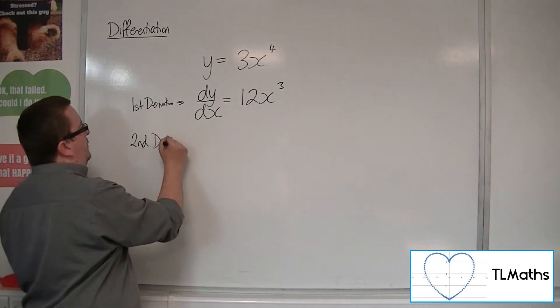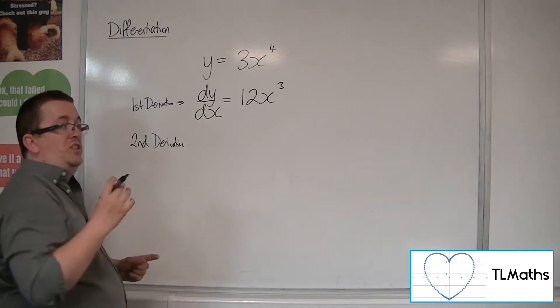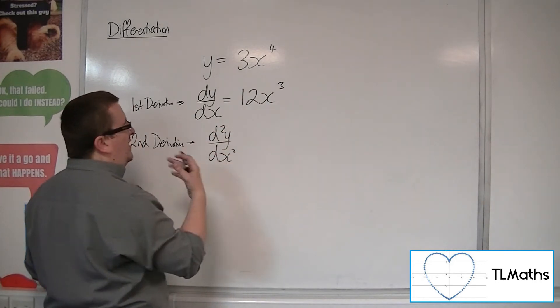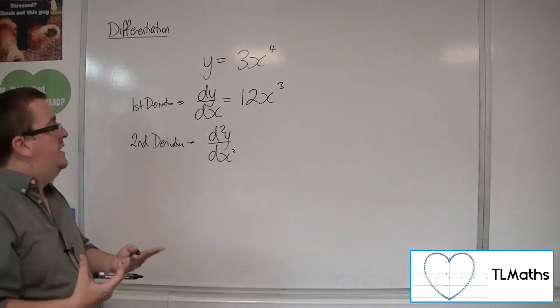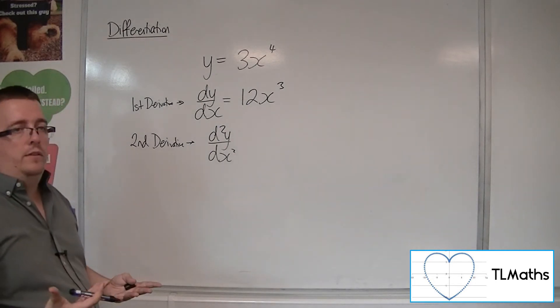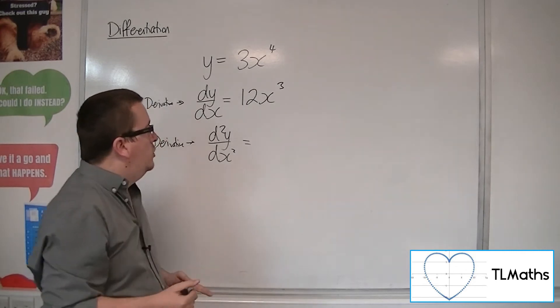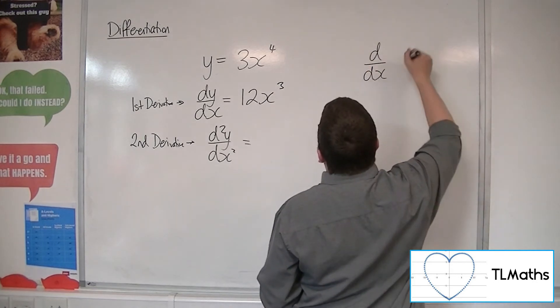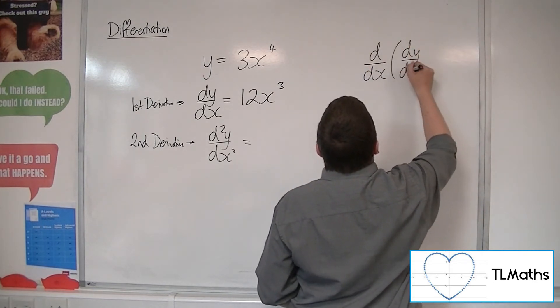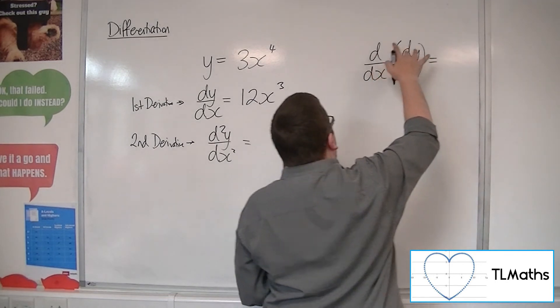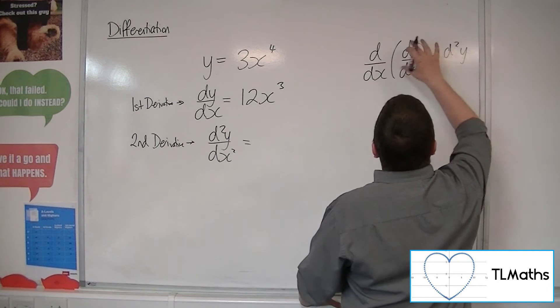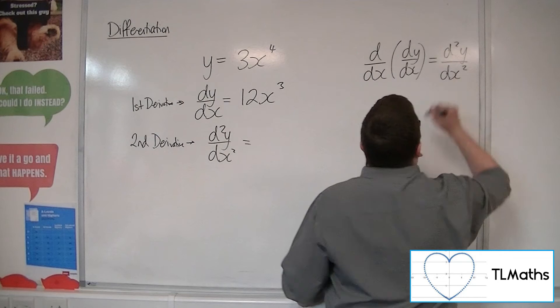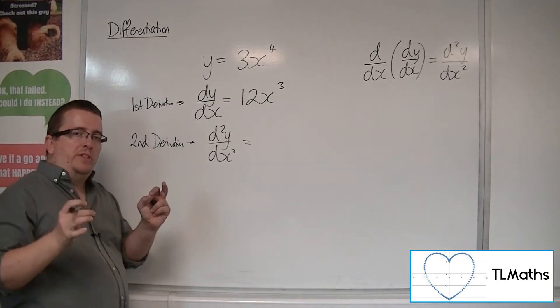Now, the second derivative has notation of d²y by dx squared. That's how we read it. It's like d squared y by dx squared. Now, the reason why it has this notation is because you are differentiating, and this is the notation we use, we are differentiating dy by dx. So you get this d squared concept coming through, and this dx all squared coming through. That's just the notation that it's given.